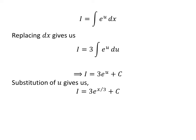We had solved the integration in terms of u. Now, we need to take the expression back in terms of x. For that, I have replaced u by x upon 3, which we had assumed earlier. So, the integral of exponential of x upon 3 is equal to 3 times exponential of x upon 3 plus capital C.